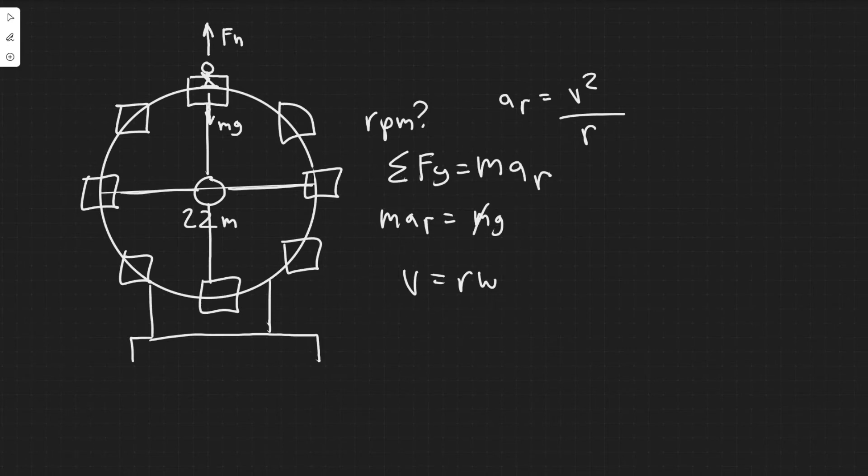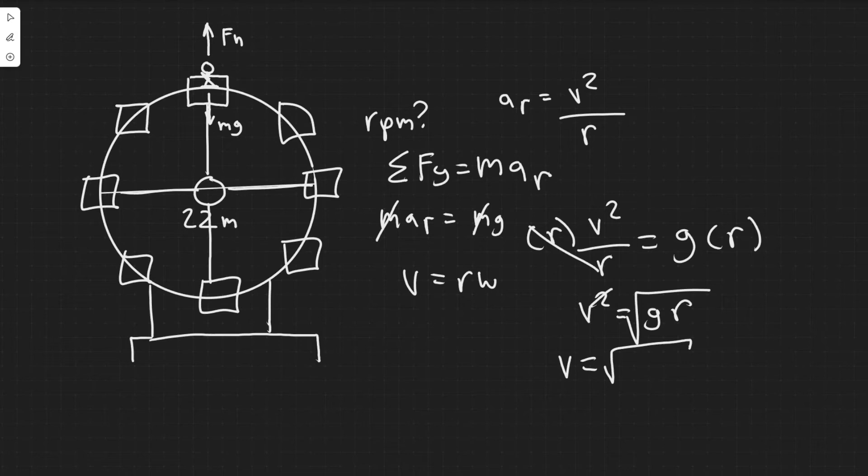So the m's are just going to cancel here since it's on both sides. And then a_r equals v squared over r is just going to be equal to g. So solving for r, you would just multiply both sides. And then we would have v squared equals gr. Then you would square root both sides. So v equals the square root of gr.